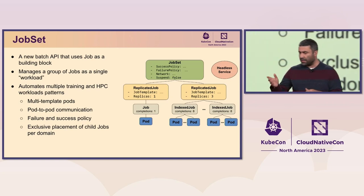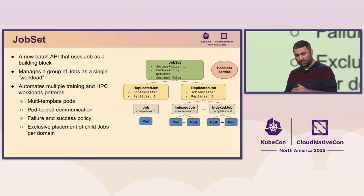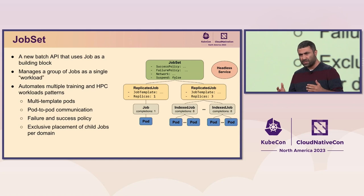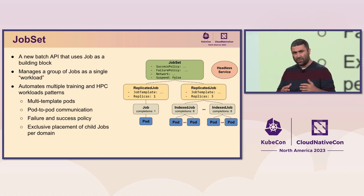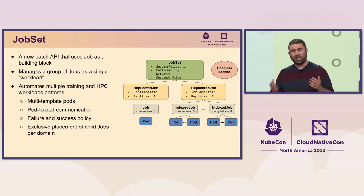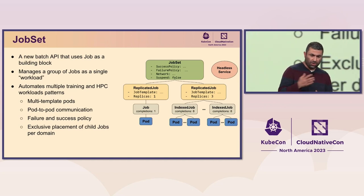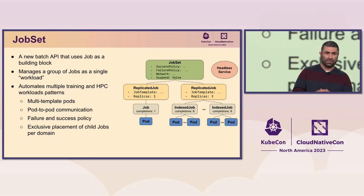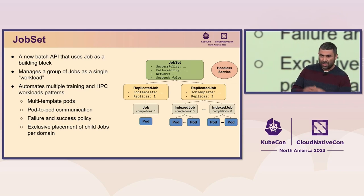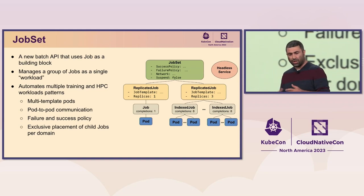As you can see in the graphic on the right side, with JobSet you are able to create or specify multiple job templates. For each template, you can specify how many jobs or replicas of that template you want. It also allows you to automate success and failure policies for this new workload that is represented as a collection of jobs.